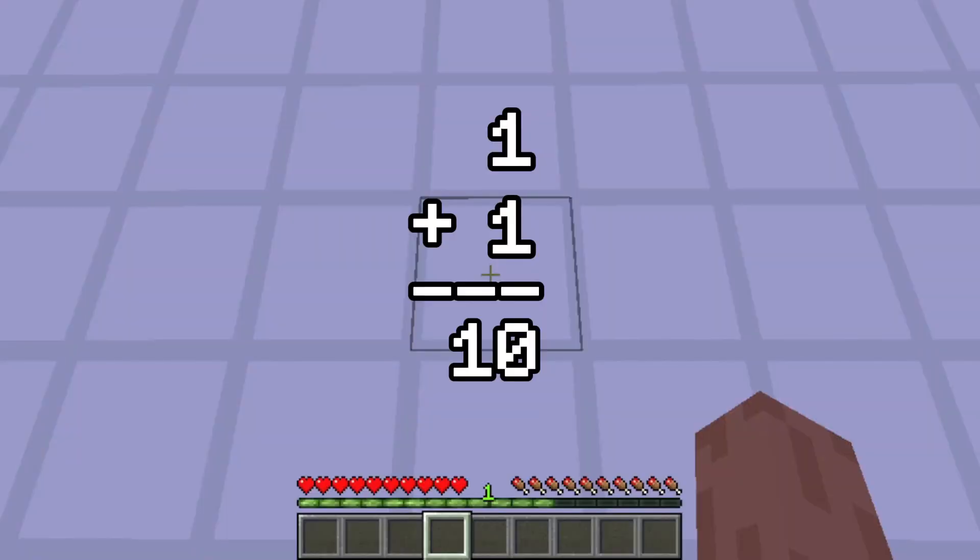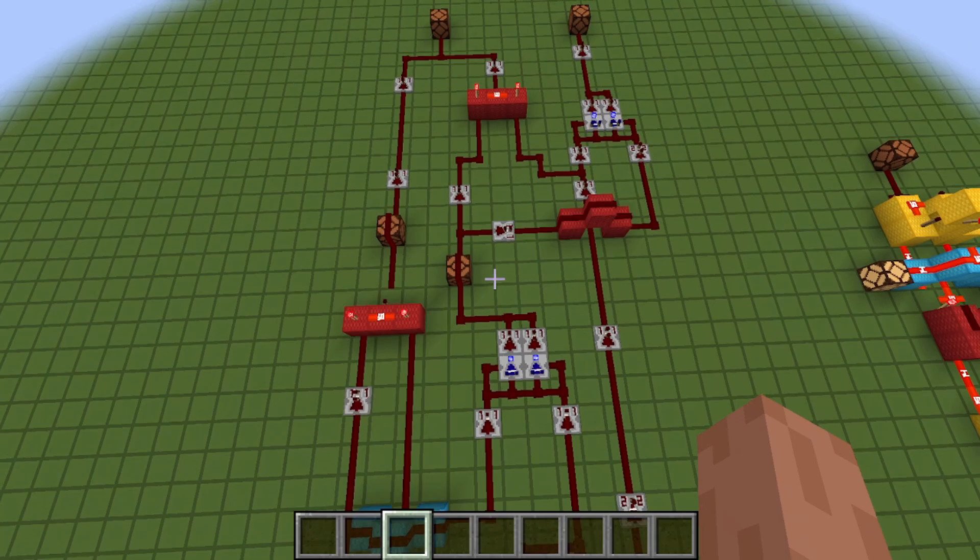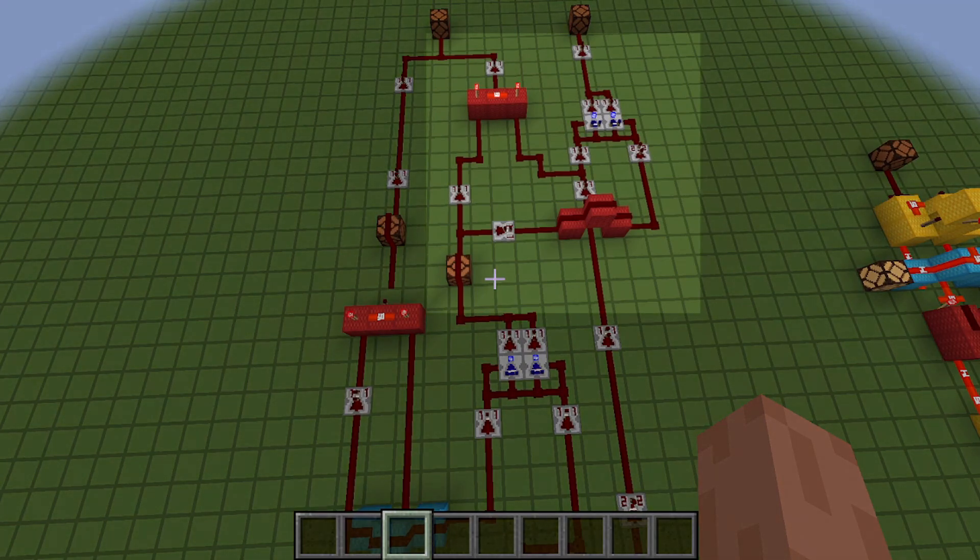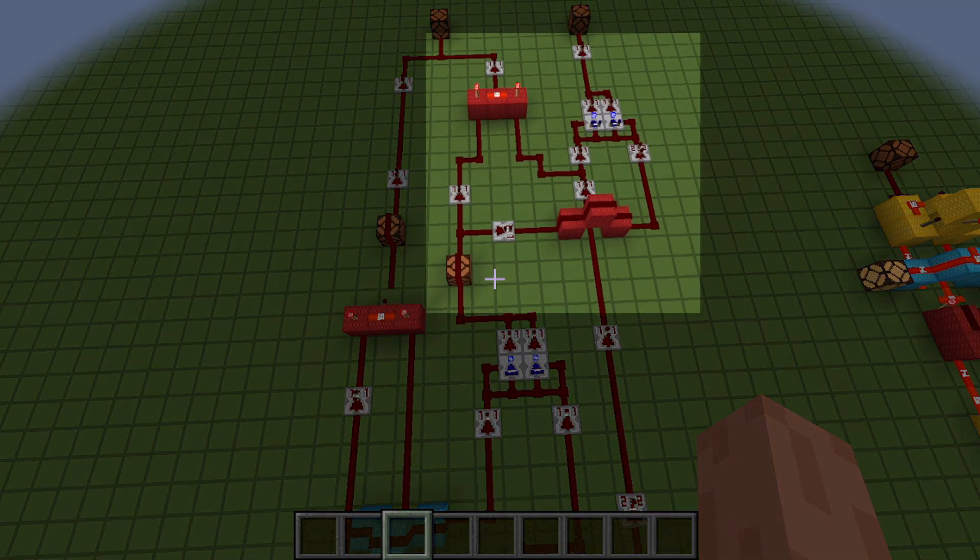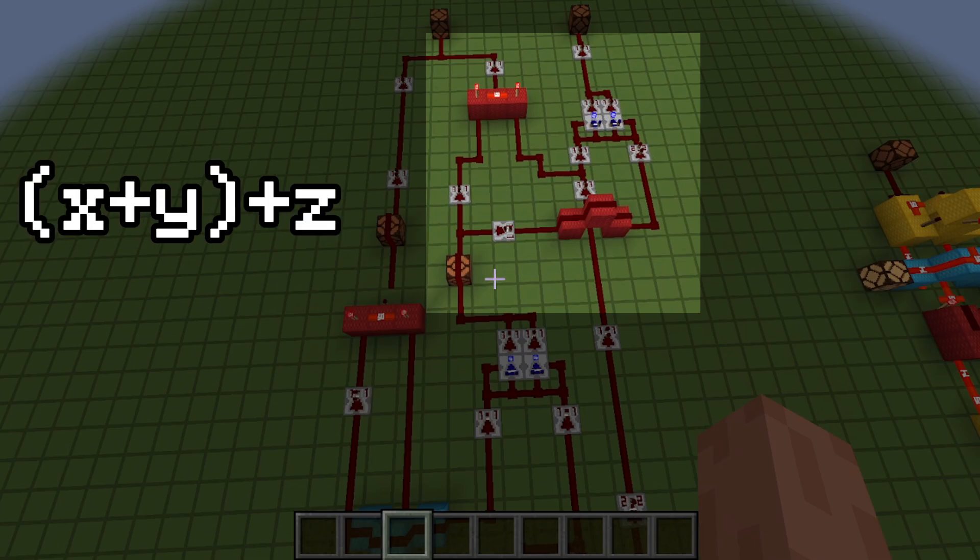However, a half adder is limited because it does not handle carry-in from a previous addition. So, let's build a full adder. To make a full adder, we just connect another half adder. This is the same as adding the first two numbers, then adding a third.